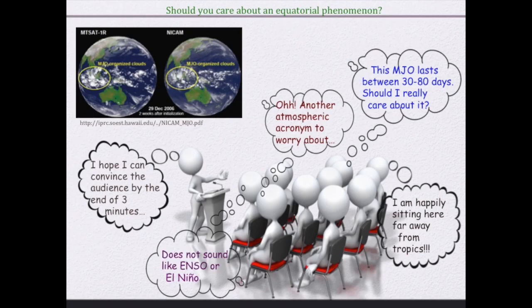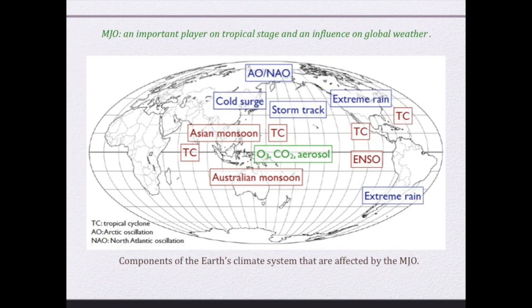So you might have some questions. All this is happening over the tropics, and we are sitting in mid-latitudes. It is a moving phenomenon, so it does not even stay in one location for that long — as you might have heard of ENSO or El Niño. So why should we care about it? Well, we should. It can influence Asian monsoon and tropical cyclones. It can cause extreme cold air breakouts over the United States.